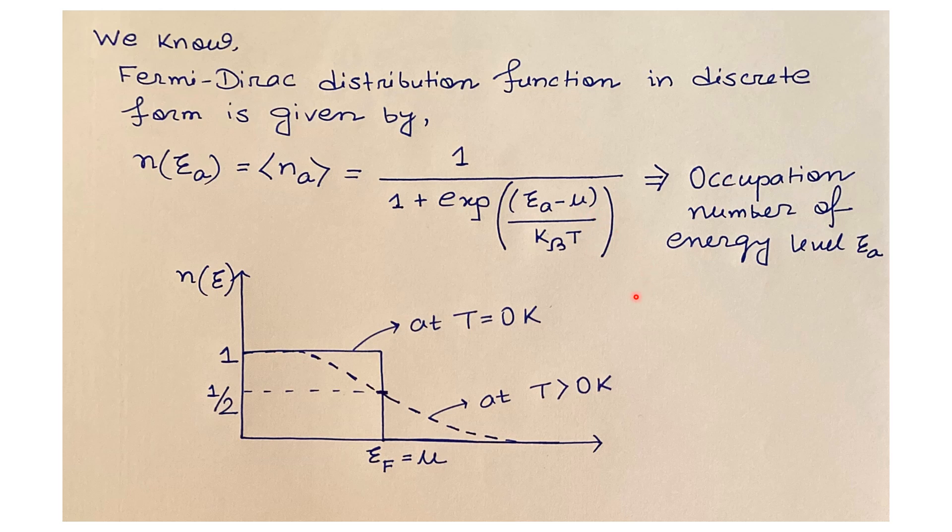Now if we want to see the plot of this function, then we will get two natures of this function. That is, at T equals zero, it will be a step function, so this function will have value one less than the energy Ef equals μ. And at T greater than zero Kelvin, it will be a decreasing function like this.